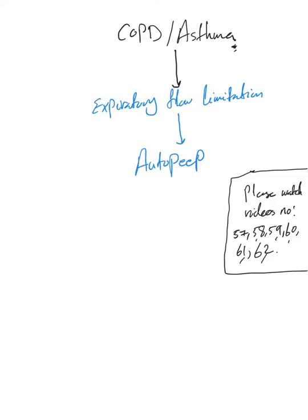So as all of you know, COPD and asthma severe exacerbation patients usually require mechanical ventilation. When do they require mechanical ventilation? The main issue is expiratory flow limitation and the main complication is auto PEEP.